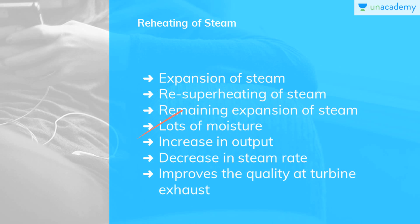Had the higher pressure been used without reheat, the cycle would have been 1 to 4s to 5 to 6s, with a lot of moisture at the turbine exhaust having quality x4s, that is the dryness fraction. With the use of reheat, area is added to the basic cycle. The net work output of the plant increases with reheat because H3 minus H4s is greater than H2s to H4s. Whether the cycle efficiency improves with reheat depends on whether the mean temperature of heat addition in process 2s to 3 is higher than that in process 6 to 1. By increasing the number of reheats, still higher steam pressures can be used, but the mechanical stresses increase in a much higher proportion than the pressure because of the prevailing higher temperature.